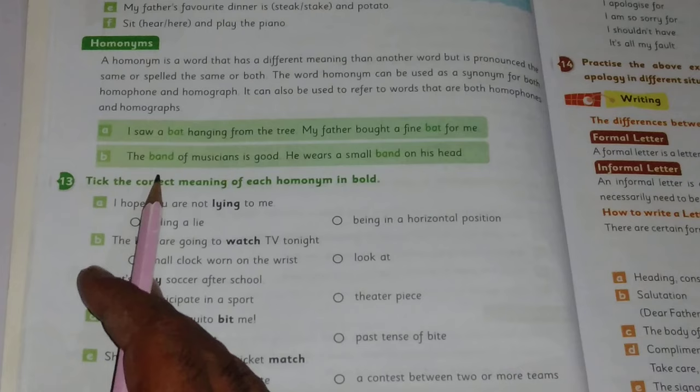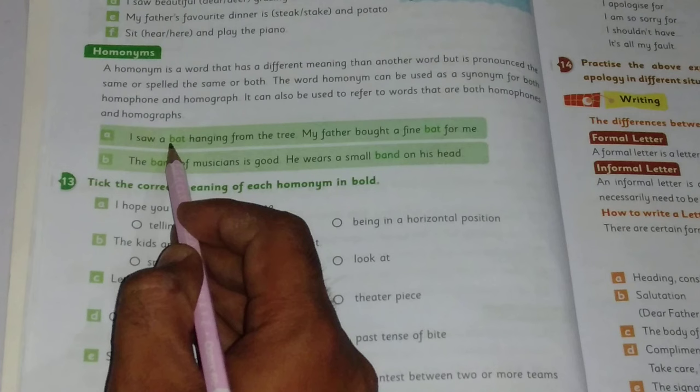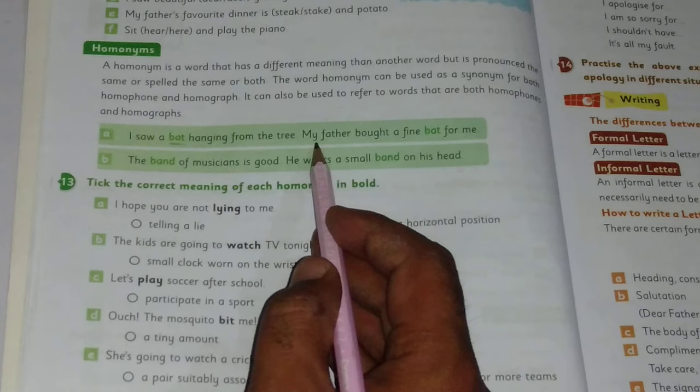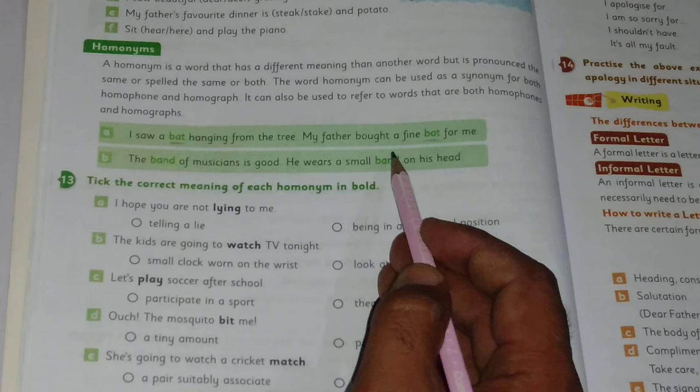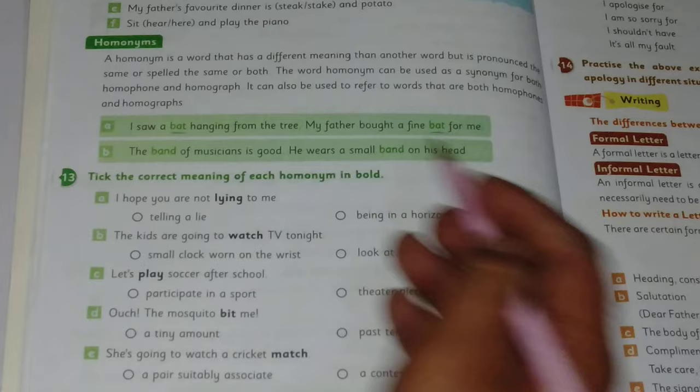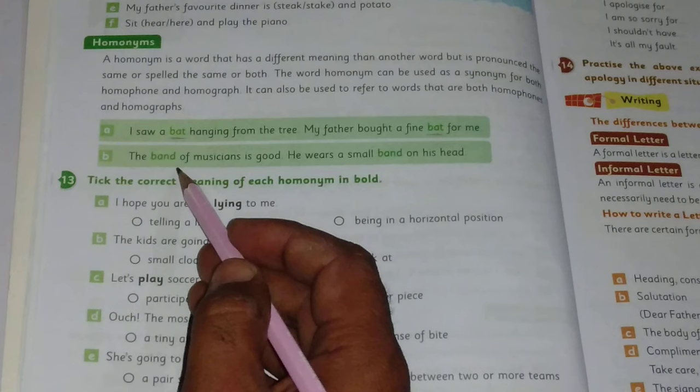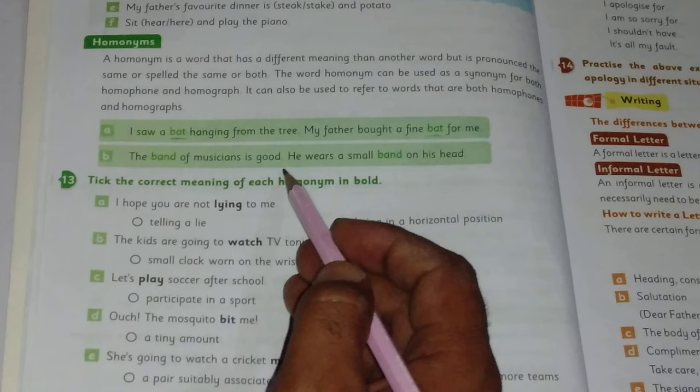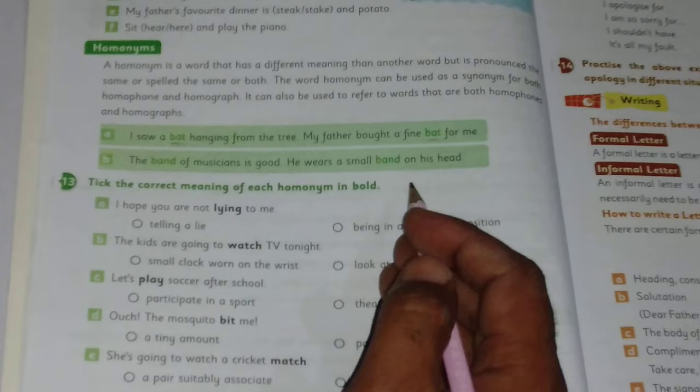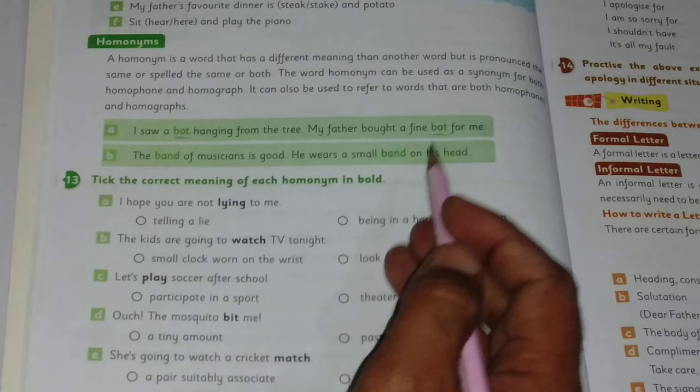Here are examples: 'I saw a bat hanging from the tree'—here bat indicates an animal. 'My father bought a fine bat for me'—bat here is the equipment we use to play cricket. Both have same spelling, same pronunciation, but their meanings are different. Next: 'The band of musicians is good'—here band means a group of musicians. 'He wears a small band on his head'—here band is something we put on our hair. Same pronunciation, same spelling, but meaning is different.